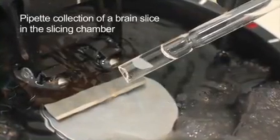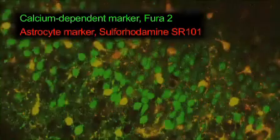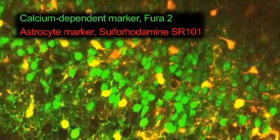Brain slices are made from the developing entorhinal cortex of a young mouse. Both neurons and astrocytes are loaded with calcium-dependent markers.